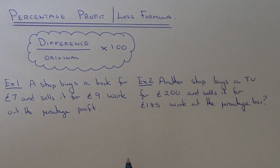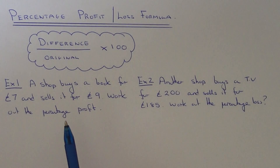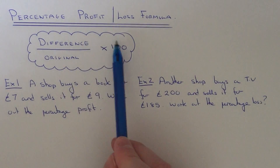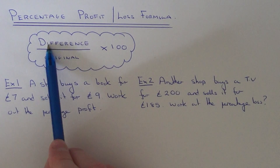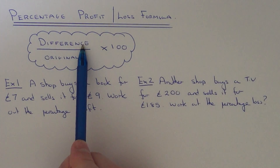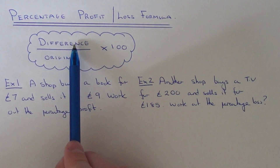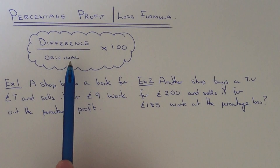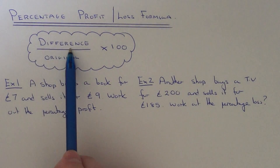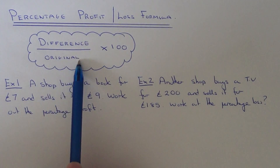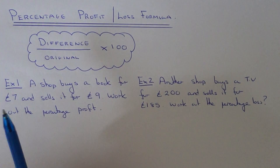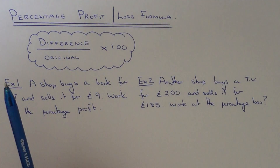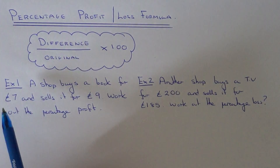Today I'm going to show you a couple of examples on how to work out a percentage profit or a percentage loss. What you have to do is use the formula which I've put here: work out the difference in the two amounts, so work out the difference between the cost price and the selling price. Then divide that answer by the original price of the item and multiply the answer by 100. Let's apply this formula onto example 1 and example 2.